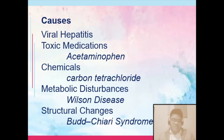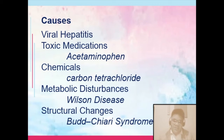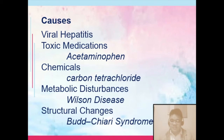Causes of fulminant hepatic failure include viral hepatitis and toxic medications — one example is acetaminophen — as well as chemicals such as carbon tetrachloride. Metabolic disturbances such as Wilson disease, a hereditary syndrome with deposition of copper in the liver, are also causes. For structural changes, you have Budd-Chiari syndrome, which is an obstruction to the outflow in the major hepatic vein.